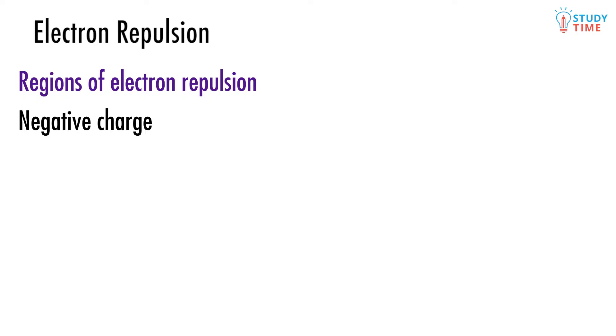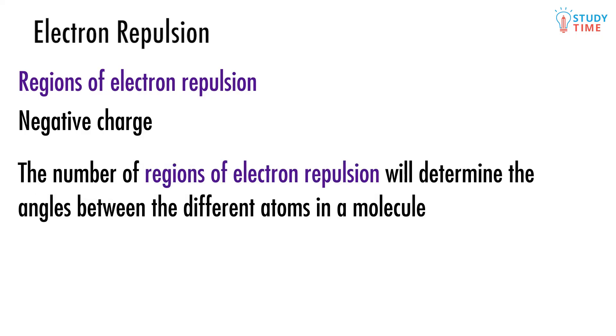Because all electrons have negative charge and negative charge hates being close to other negative charge. This means that any bond or lone pair, or any other phenomenon based on electrons, will repel itself away from the central atom. The number of regions of electron repulsion will determine the angles between the different atoms in a molecule.